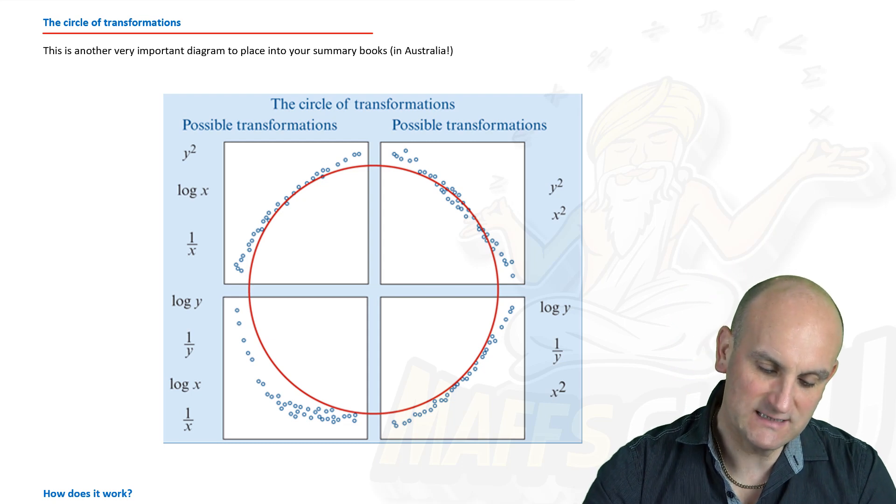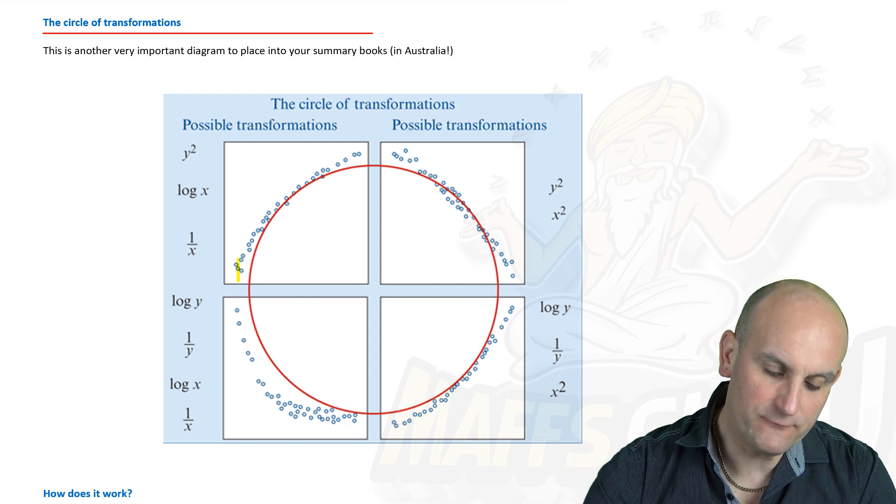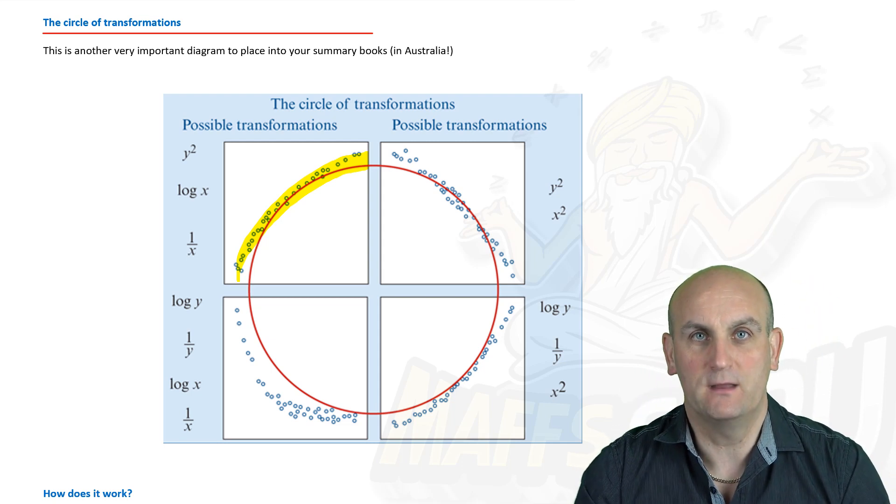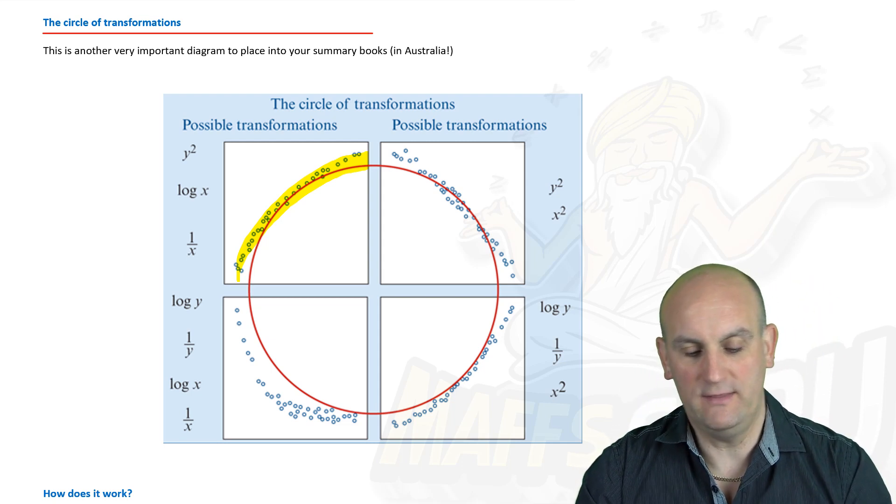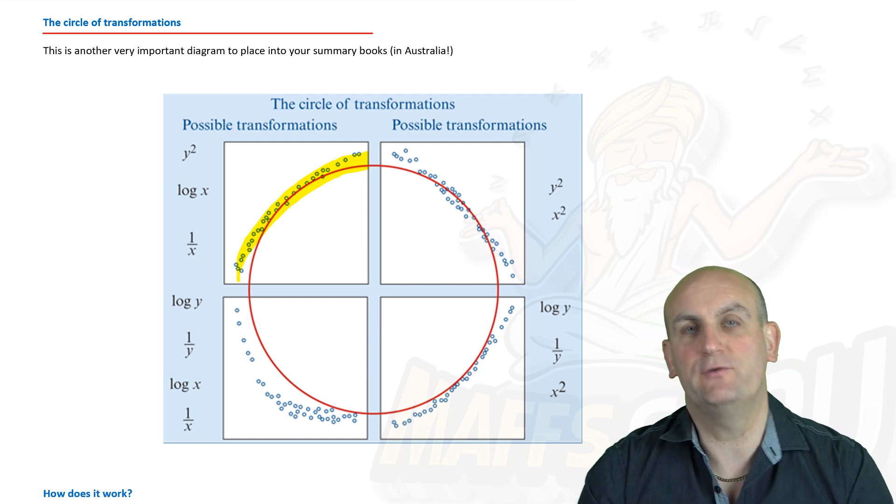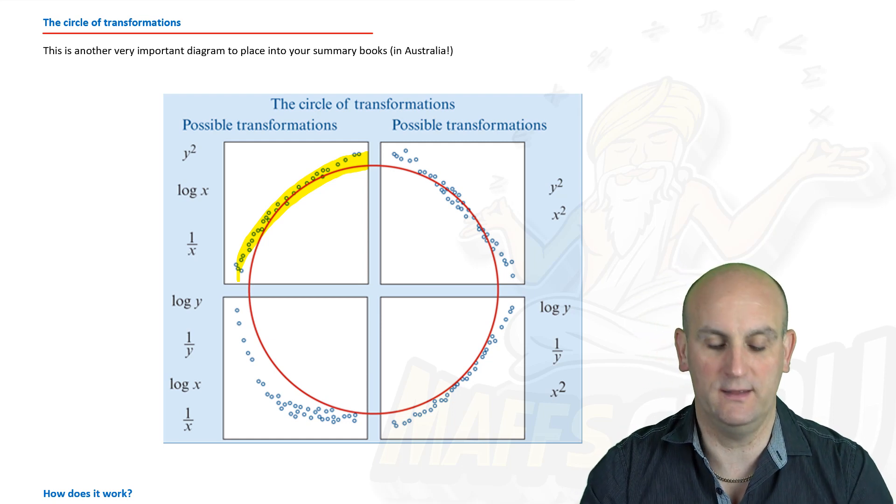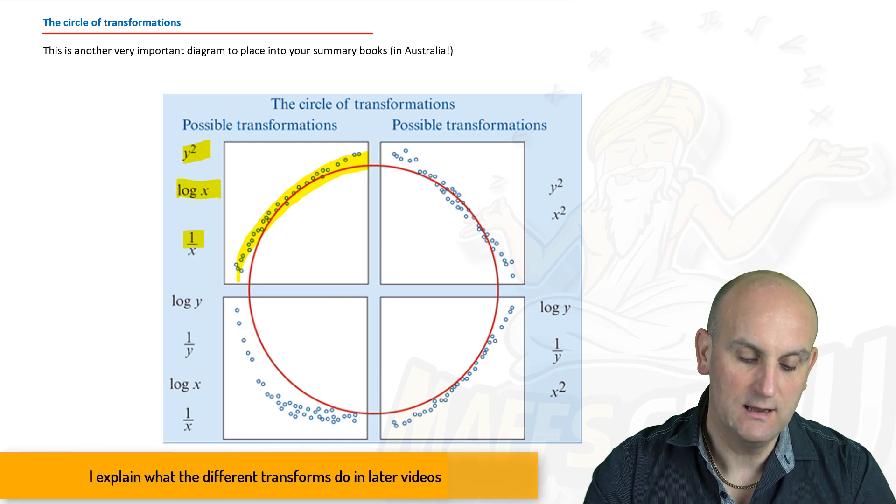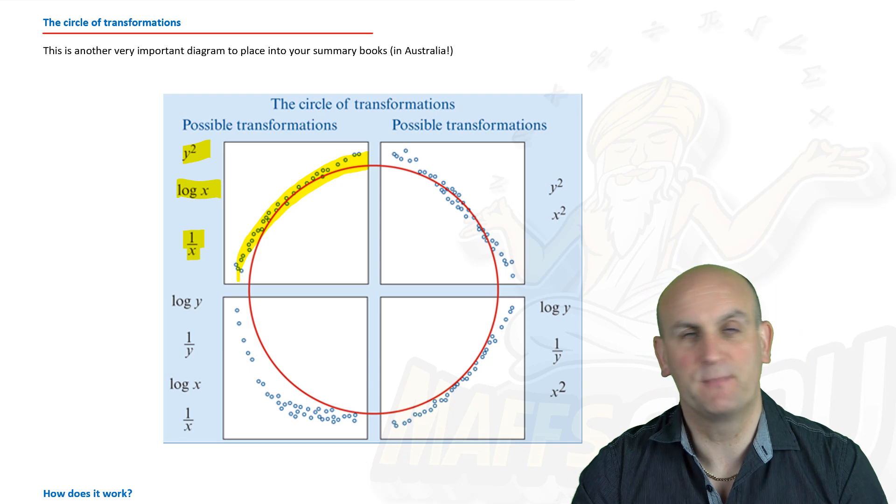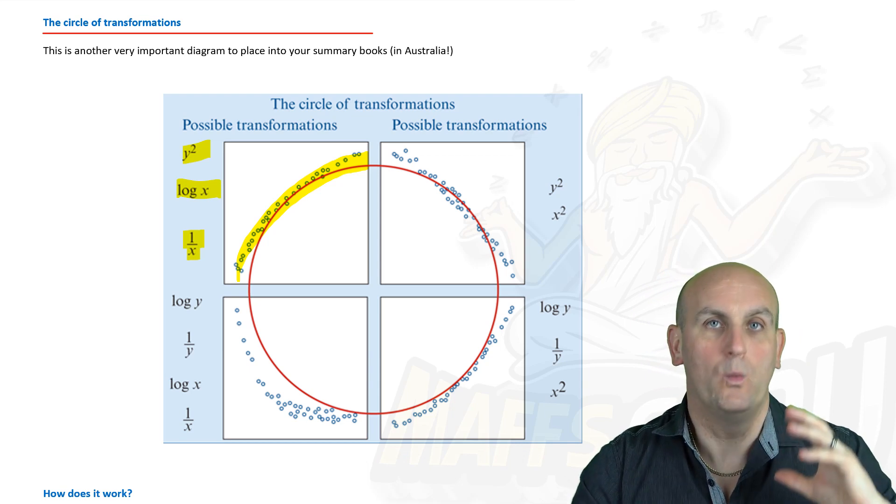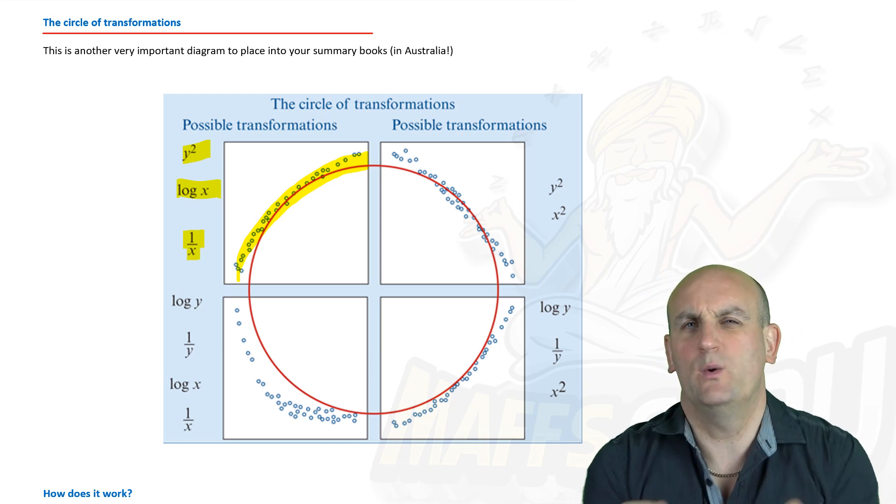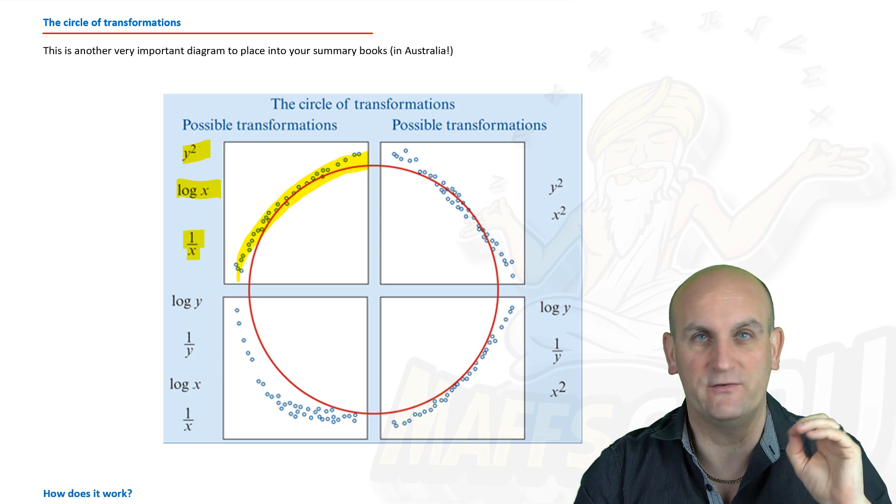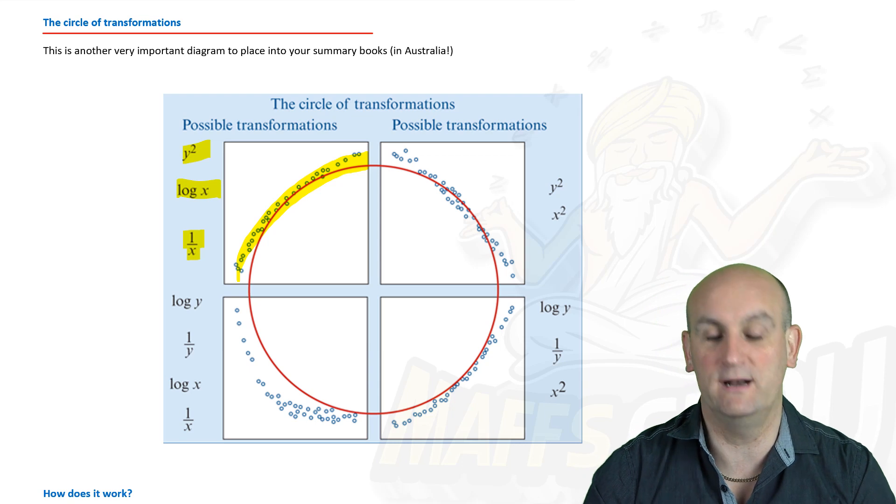So looking at an example here if I had for example data that seemed to curve in that direction then it says here that there are three possible transformations that you can use to turn that data straight. Y squared, log x and 1 on x otherwise known as the reciprocal of x. Now many of these will be a little bit new to you or you won't have seen them in this format or this context.